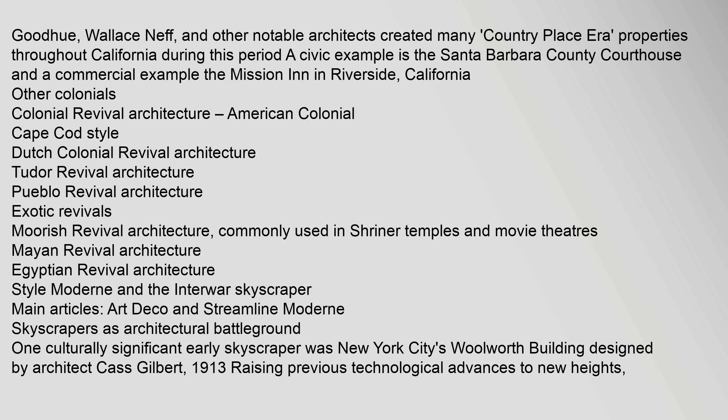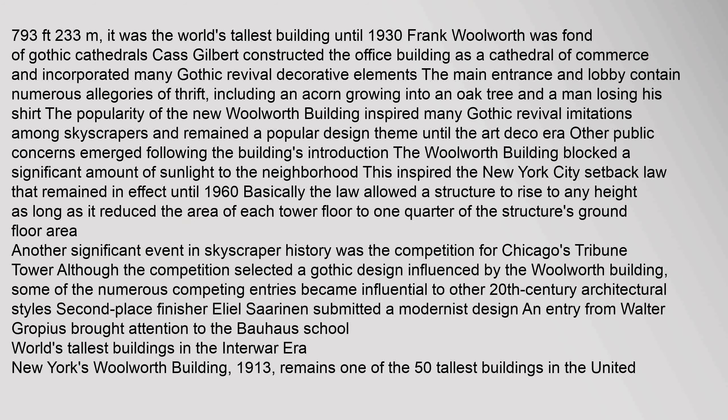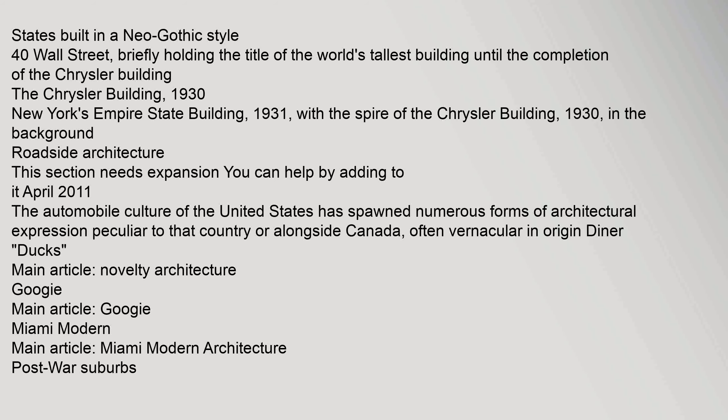One culturally significant early skyscraper was New York City's Woolworth Building, designed by architect Cass Gilbert in 1913, raising previous technological advances to new heights and built in a Neo-Gothic style. 40 Wall Street briefly held the title of the world's tallest building until the completion of the Chrysler Building in 1930. New York's Empire State Building followed in 1931, with the spire of the Chrysler Building visible in the background.